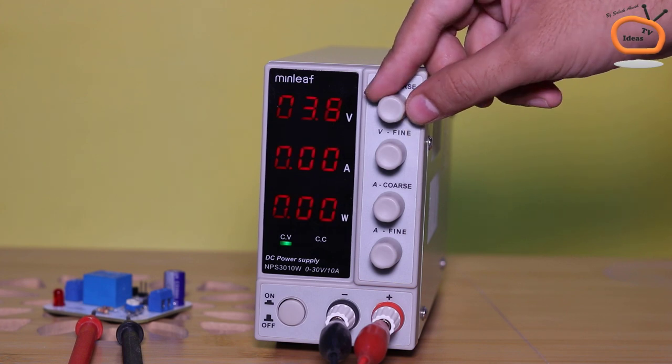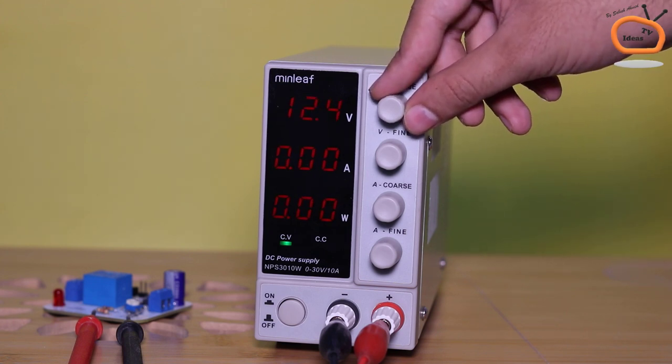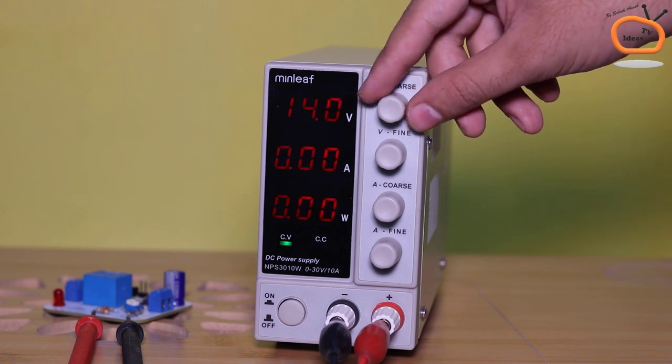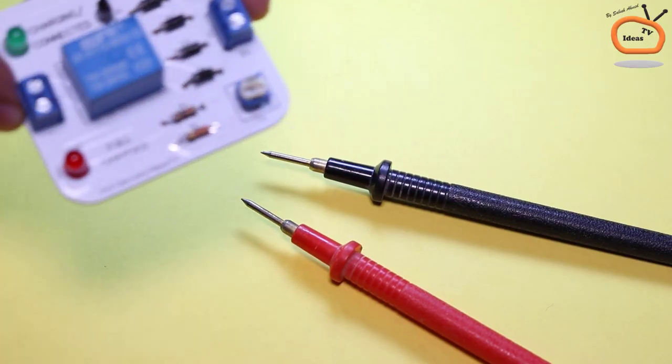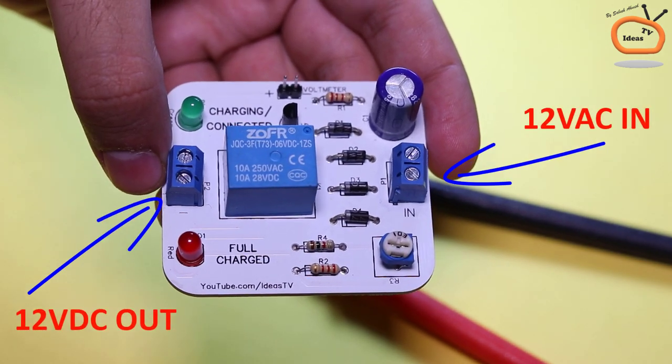For calibrating the auto cutoff function or overcharge protection system, set your power supply to 14V and connect that 14V power supply to the 12V AC input of the circuit.